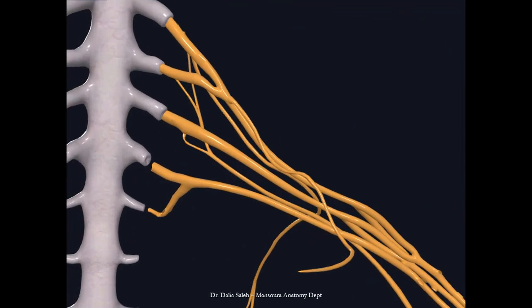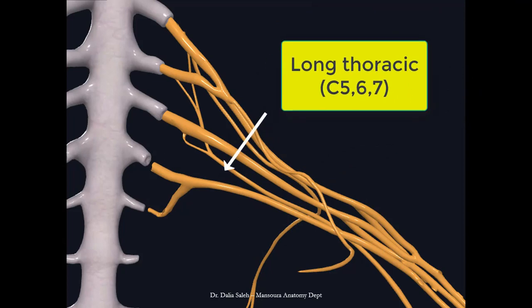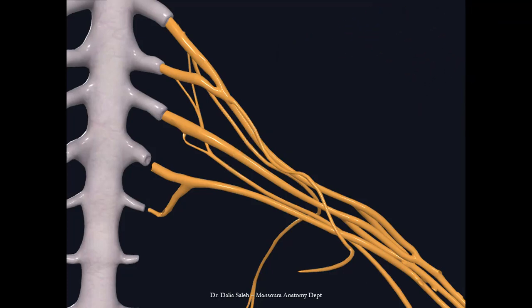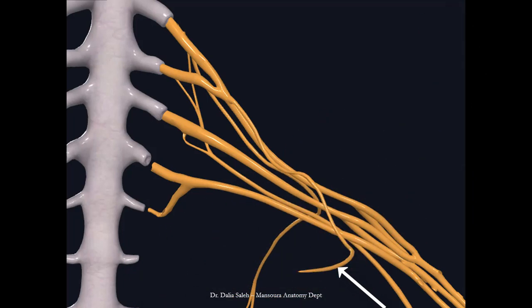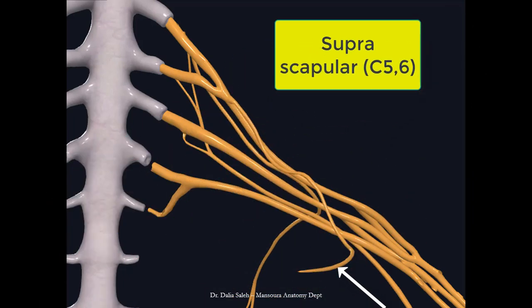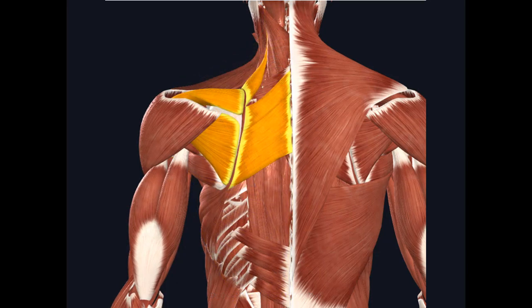From the roots, we have the dorsal scapular nerve, which arises from C5, and the long thoracic nerve, which arises from C5, 6, and 7. From the upper trunk, we have two nerves: the nerve to subclavius and the suprascapular nerve. If we remove the trapezius and latissimus dorsi to see the deeper layer, we can see the levator scapulae, rhomboid minor, and rhomboid major — all supplied by the dorsal scapular nerve from C5.